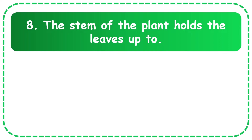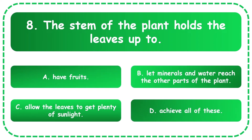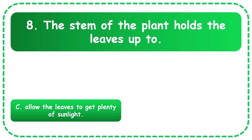Next question: The stem of the plant holds the leaves up to — the options are have fruits, let minerals and water reach other parts of the plant, allow the leaves to get plenty of sunlight, or achieve all of this. The answer is allow the leaves to get plenty of sunlight.